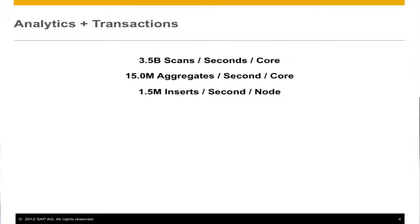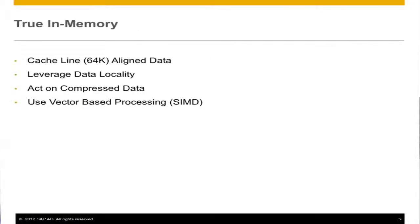So how do we get there? The roadmap had four key areas. First: cache-line alignment — what is the fastest way to get data down into a register? If it's not in the register, it's not being computed. Second: data locality — how do we deal with data spread across L1s, L2s, L3s, and NUMA architecture, and have the optimizer account for that? Third: acting on compressed data directly and making that extremely fast. Fourth: vector processing — if I'm moving data into a 256-bit register, why waste space? Pack it up and act on multiple values in parallel.